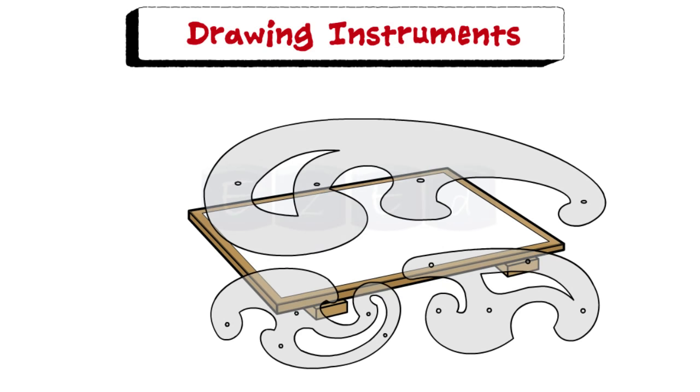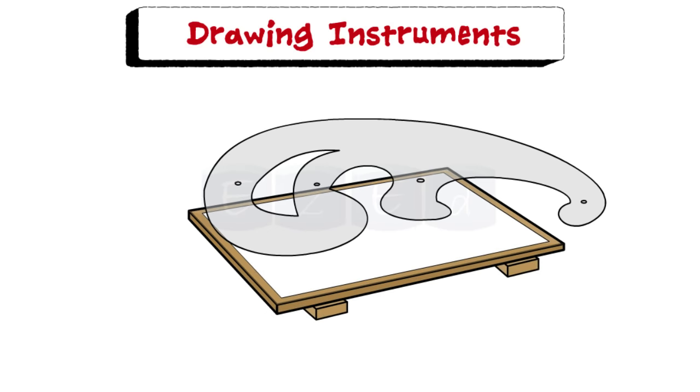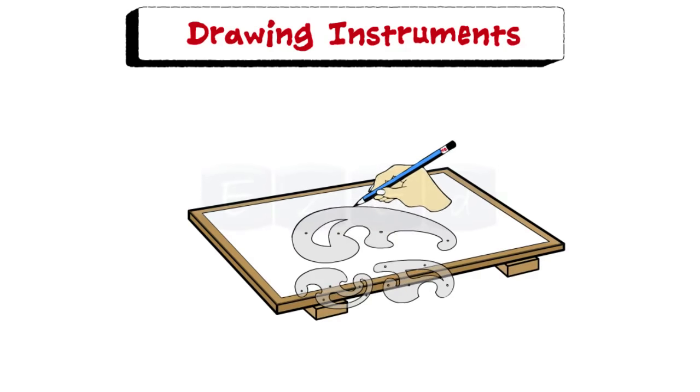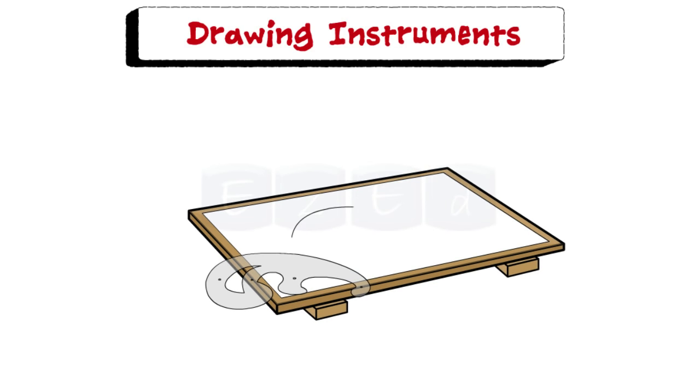Next instrument is a French curve. They are made in various shapes, one of which is shown here. French curve is used for drawing curves which cannot be drawn with a compass. It is used to draw curves like ellipse, parabola, hyperbola, etc.